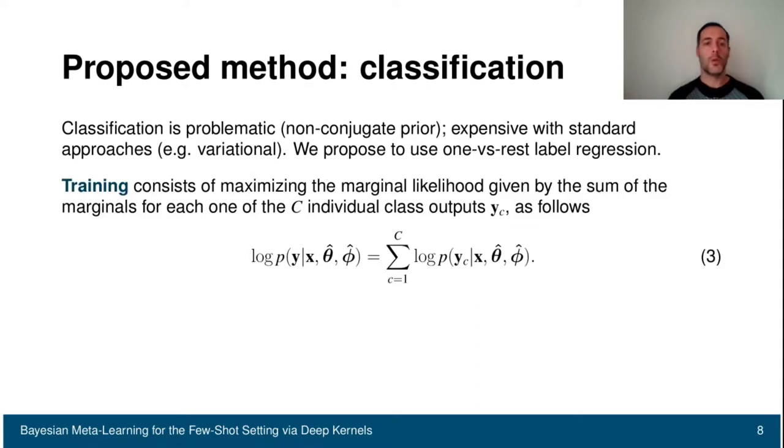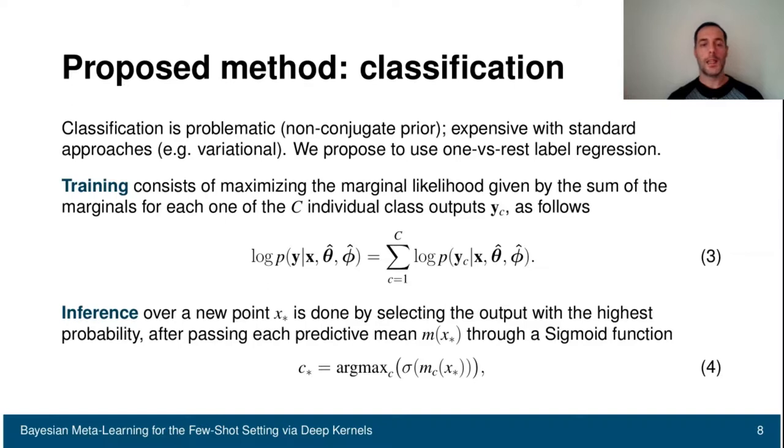At training time, we maximize the marginal likelihood given by the sum of the marginals for each one of the C individual class outputs. While at inference time, given a new point or a new task, what we do is estimate the predictive mean for each one of the C classes, pass this predictive mean through a sigmoid, enforcing a probabilistic interpretation, and then choose the class with the highest probability.